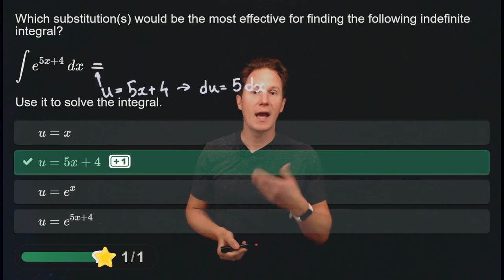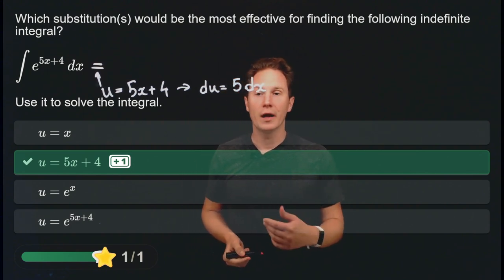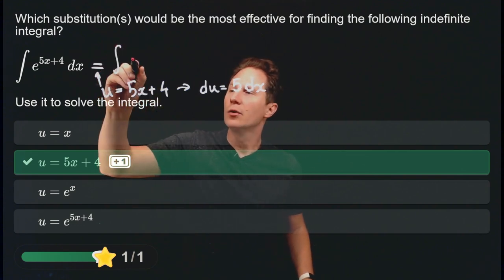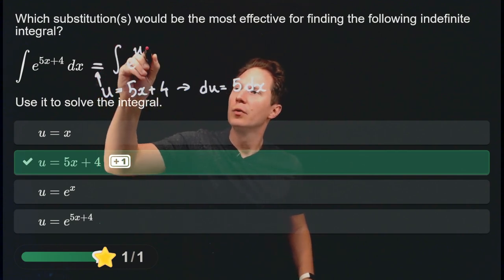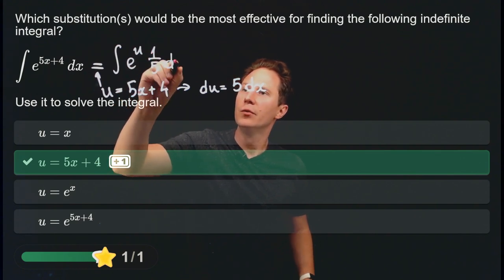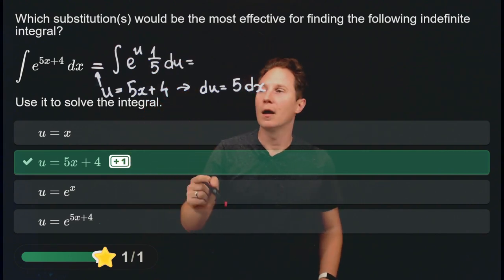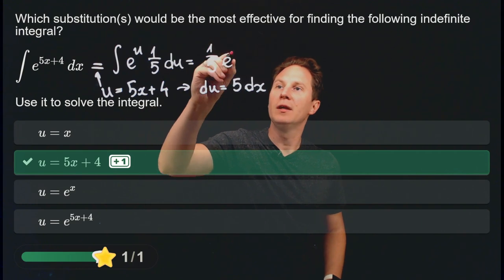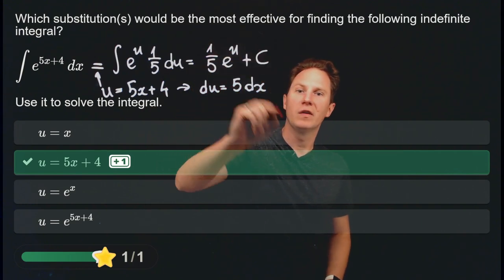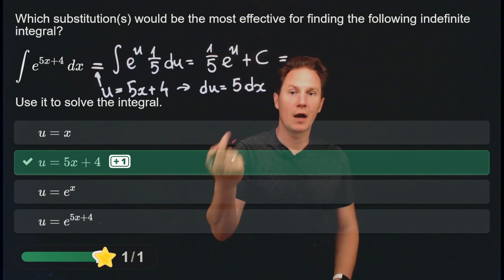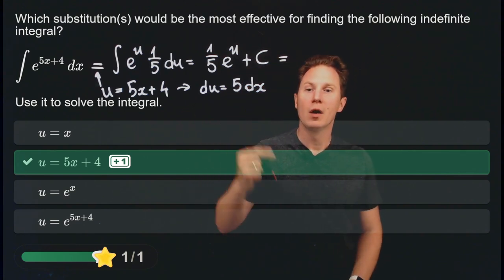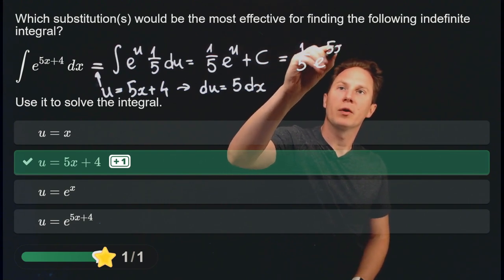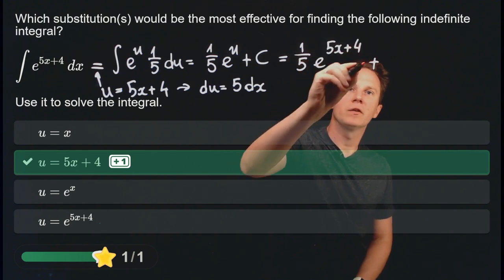In other words, dx = (1/5) du. So we can write the integral as the integral of e^u · (1/5) du, which integrates to (1/5)e^u + C. Substituting back in, u = 5x + 4 gives us (1/5)e^(5x+4) + C.